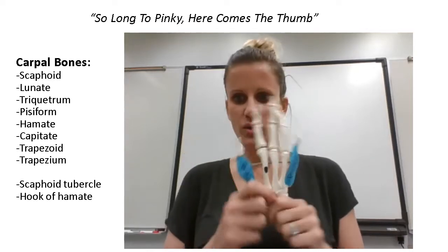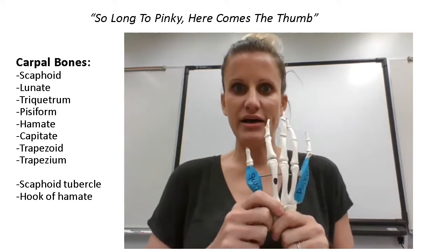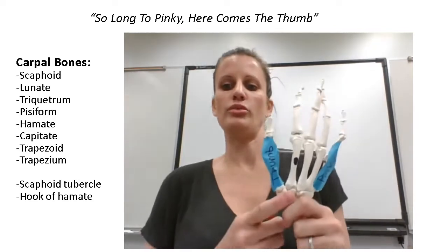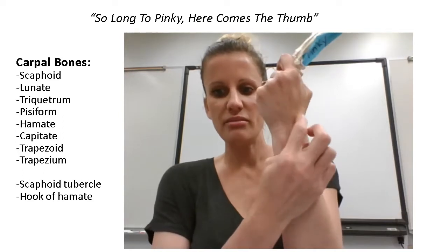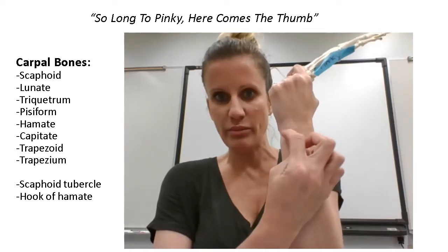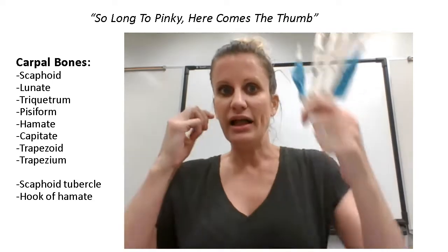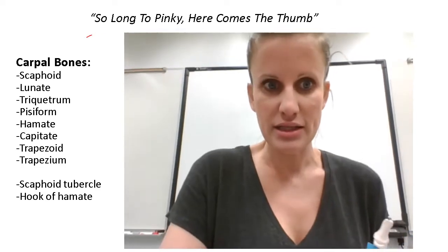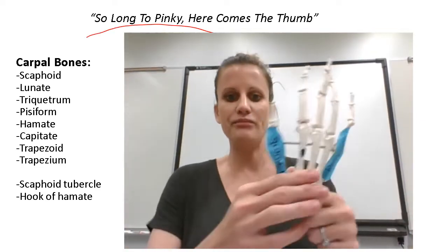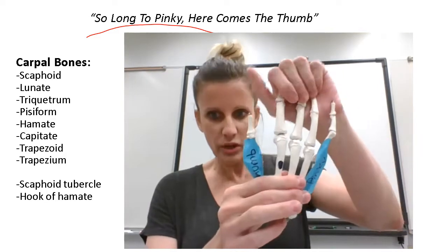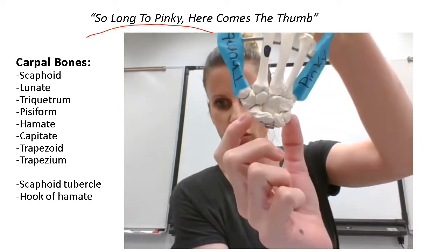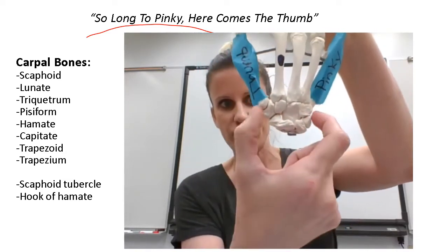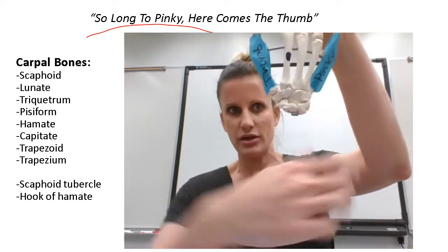We are going to do a quick video going over the carpal bones. There are eight carpal bones — carpal refers to the wrist, so we're talking about the eight little boxy bones located in the wrist. There are four bones at the proximal side, closest to the arm, and four carpal bones at the distal side, closest to the fingers.